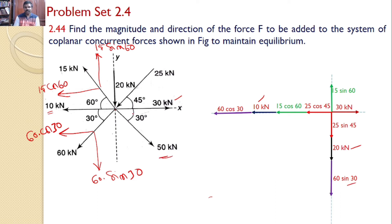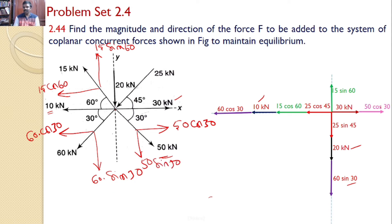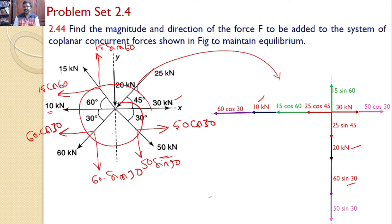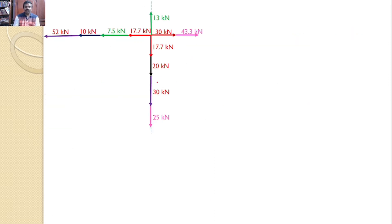The last force is 50 kN, which makes an angle of 30° with the x-axis. Hence the x-axis component is 50 cos 30° and the y-axis component is 50 sin 30°. All the given forces have now been resolved along the x-axis and y-axis.